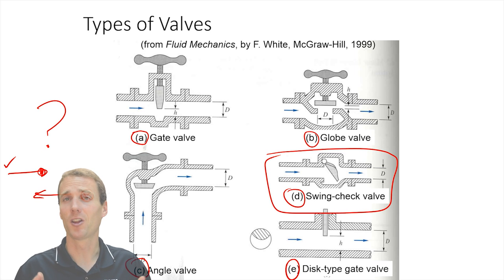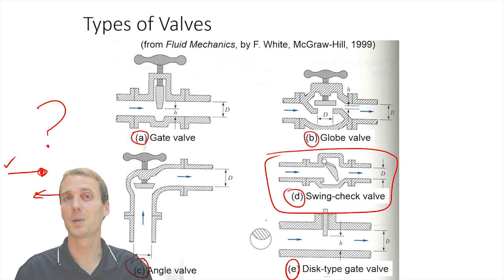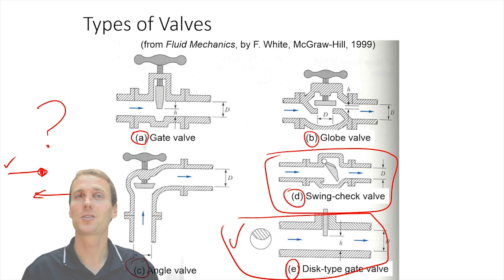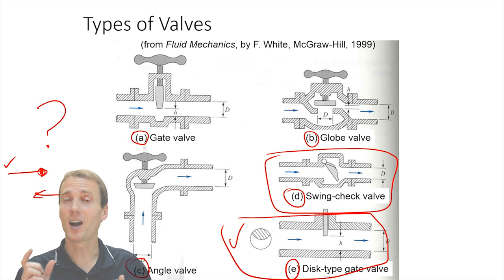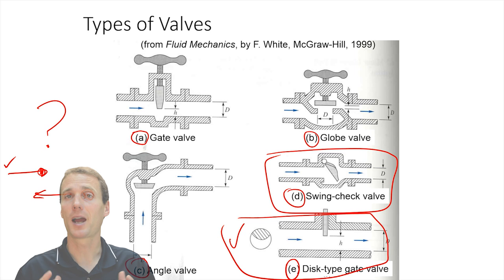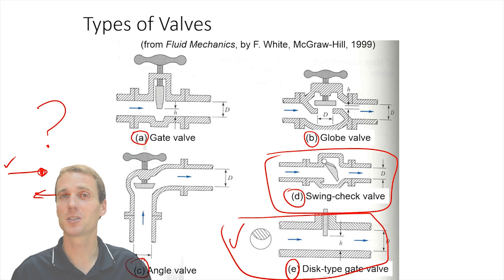Also, which valve is going to have the lowest loss if we have it open most of the time? Maybe a disc valve, for example, may have a low loss. And there are going to be different types of valves that are going to be good for situations where we want very fine control of the flow and very accurate flow control. Different types of valves, different uses — these are just some cutaway views.